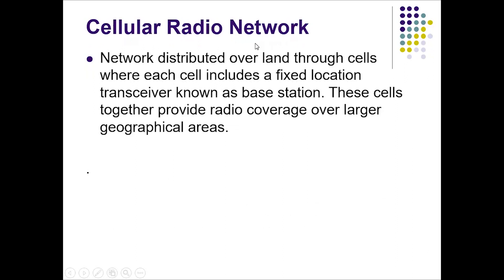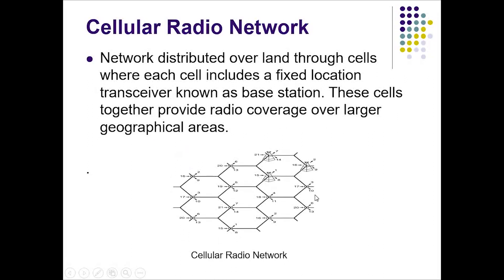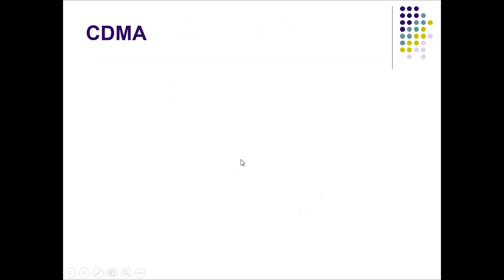Cellular radio network is distributed over land through cells, where each cell includes a fixed location transceiver known as a base station. These cells together provide radio coverage over large geographical areas. Here we see a graphical representation where each cell is connected and the connected cells create a large radio network.